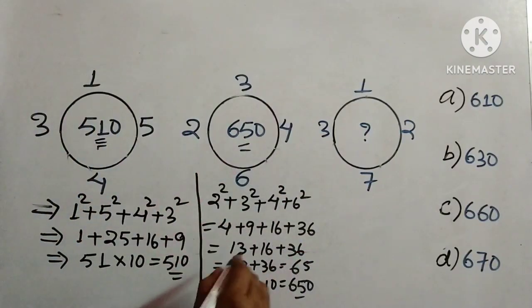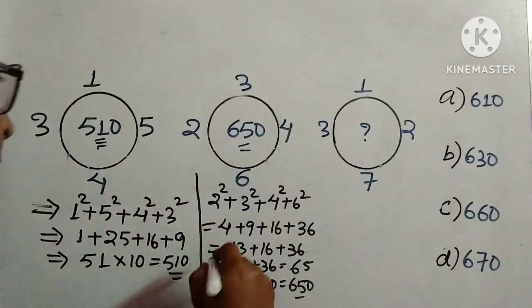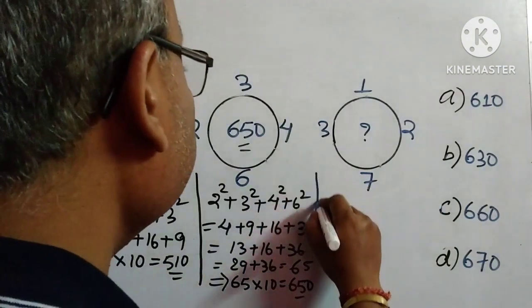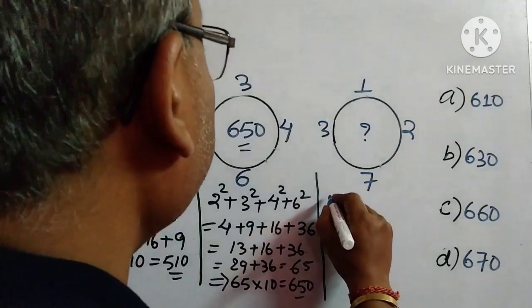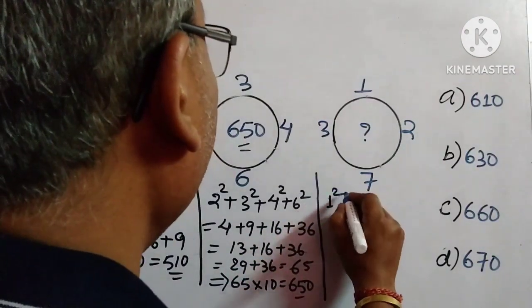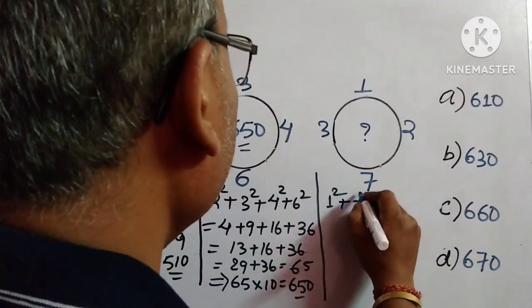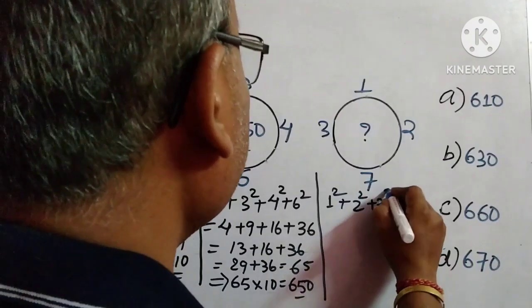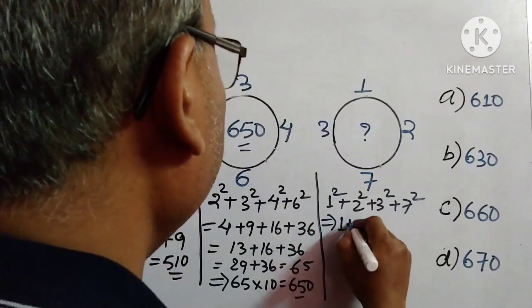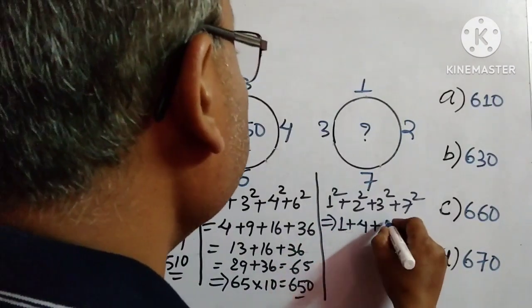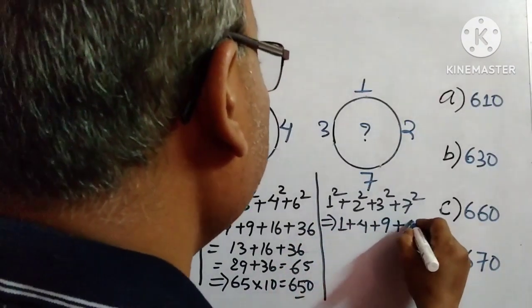We will now apply this same process in the third figure to get the answer. What we need to do: 1² + 2² + 3² + 7². So 1² is 1, 2² is 4, 3² is 9, and 7² is 49.